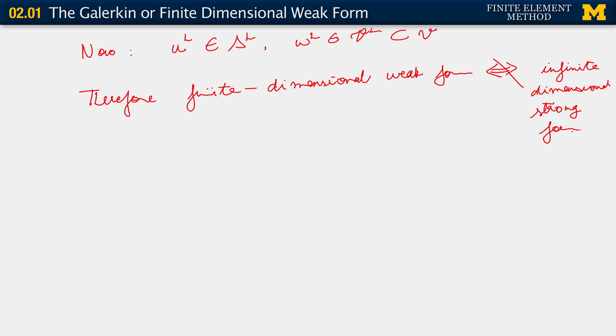It could, however, imply the infinite dimensional strong form if it turns out that the problem we were looking at, because of the data supplied to us, did indeed have solutions that lived in the smaller space S^H. In that case, it would work out. And in fact, we will see that the finite element method has a very powerful property to make that work. We will see more of that when we understand the convergence properties of finite element methods.